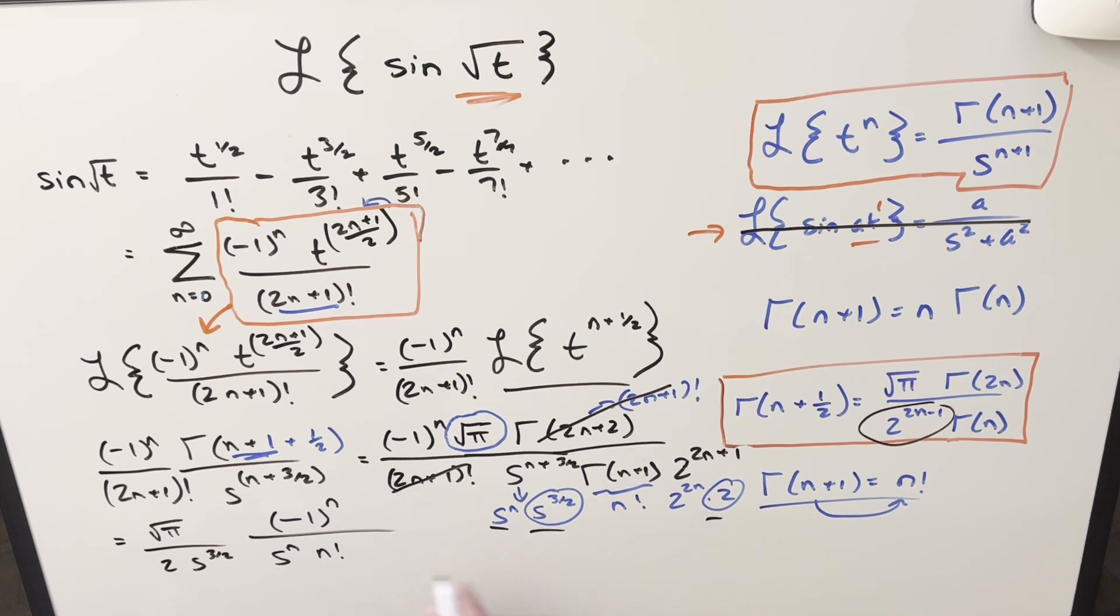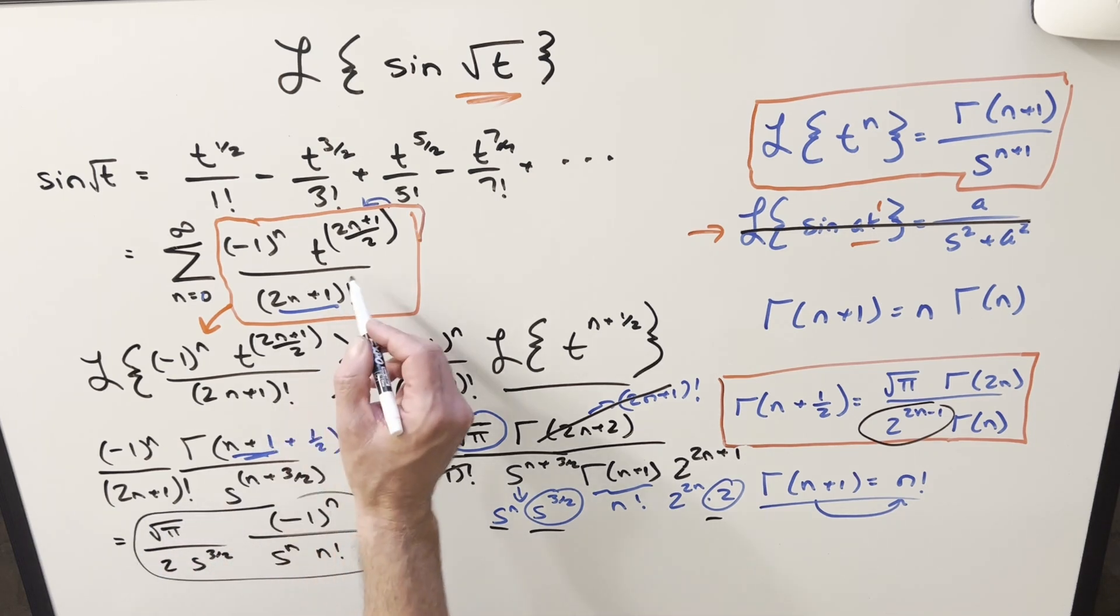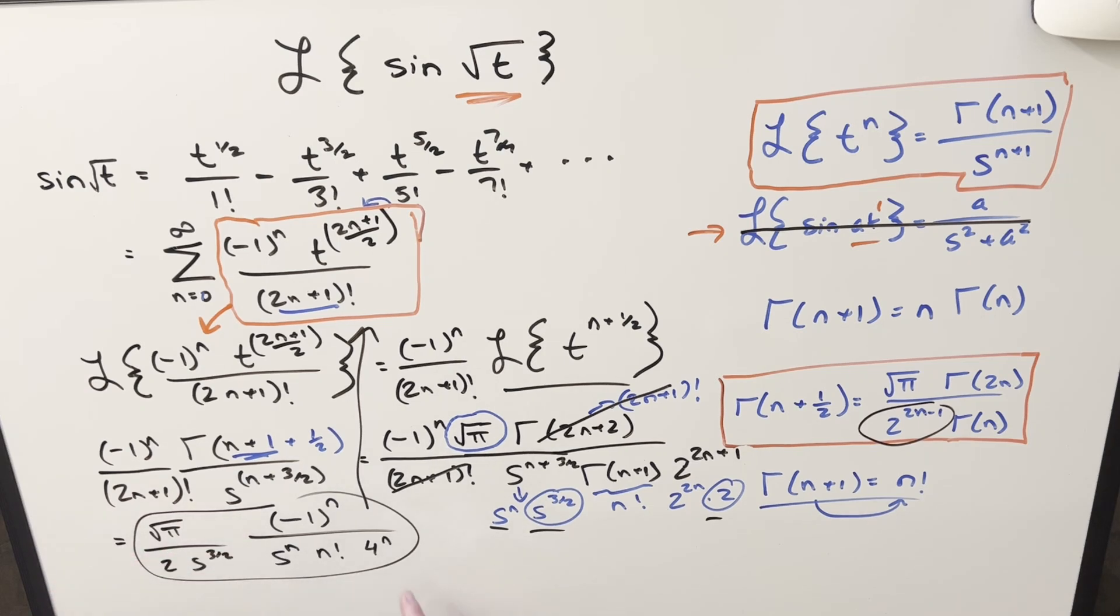And we're going to have this 2 to the 2n. I can, with exponent properties, I can write this as 4 to the n. So let's write this as 4 to the n. And then let's just take everything we have here. And remember, this is inside a series. So let's plug it back in, and then see if we can simplify this and finish it off.